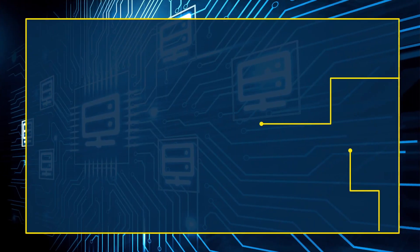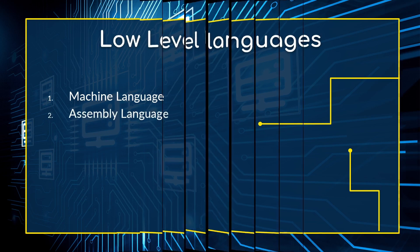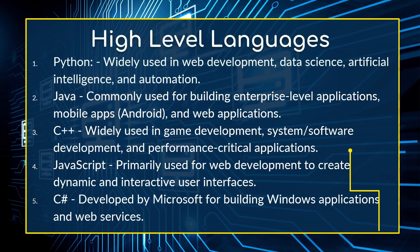Under low-level languages we have machine language and assembly language. Under high-level languages, we have many examples. We have Python, which is widely used in web development, data science, artificial intelligence, and automation. We also have Java, which is very helpful for building enterprise-level applications like mobile apps and web applications. C++ is another example, useful in game development, system software, and performance-critical applications.